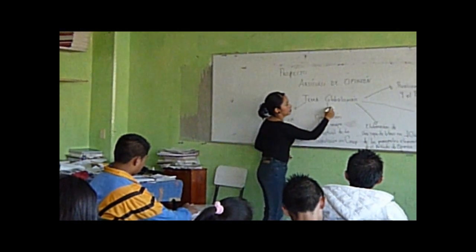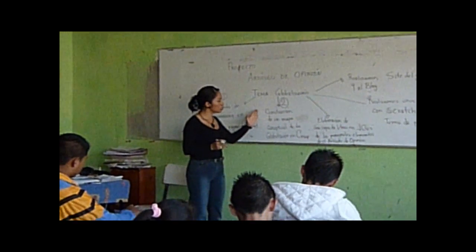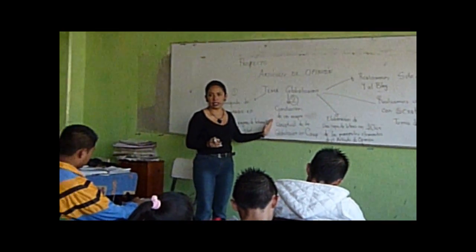La segunda estrategia va a ser la construcción de un mapa conceptual en el software de CIMA. Una vez en el programa de CIMA, vamos a darle en Archivo y le vamos a dar un nuevo cap. En cada uno de los globos que están ahí para colocar los conceptos, saben que el concepto principal debe de ir en grande. Ya saben cómo darle formato a cada uno de los objetos.